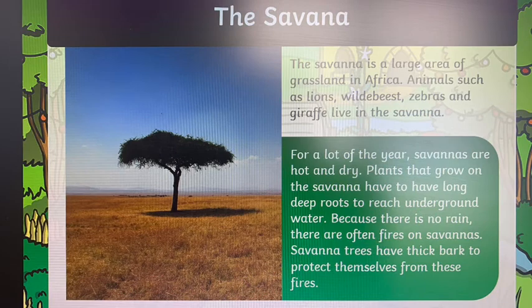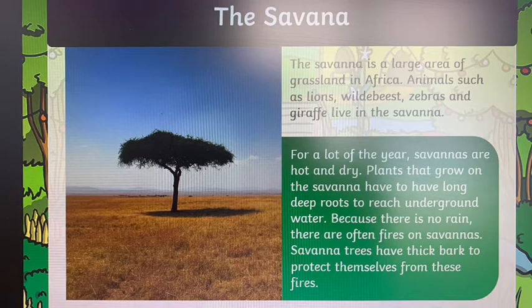Another habitat is the savannah. The savannah is a large area of grassland in Africa — where you see things like The Lion King, that setting, that habitat. Animals such as lions, wildebeest, zebras, and giraffes all live in the savannah.